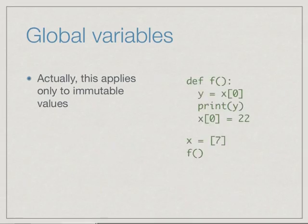If we change this function as follows, we made x not an integer but a list, for example, and we ask y to pick up the zeroth element of the list. Then later in f, we change the zeroth element of x to 22.